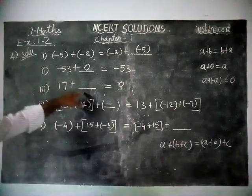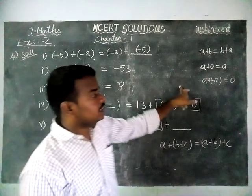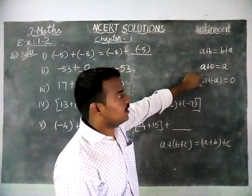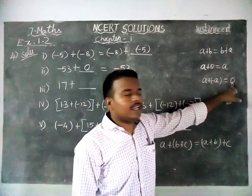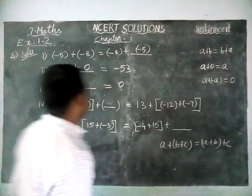Third question, 17 plus dash is equal to 0. This is additive inverse. When we are adding the positive integer with the same negative integer, we will get 0 as answer. So, additive inverse.